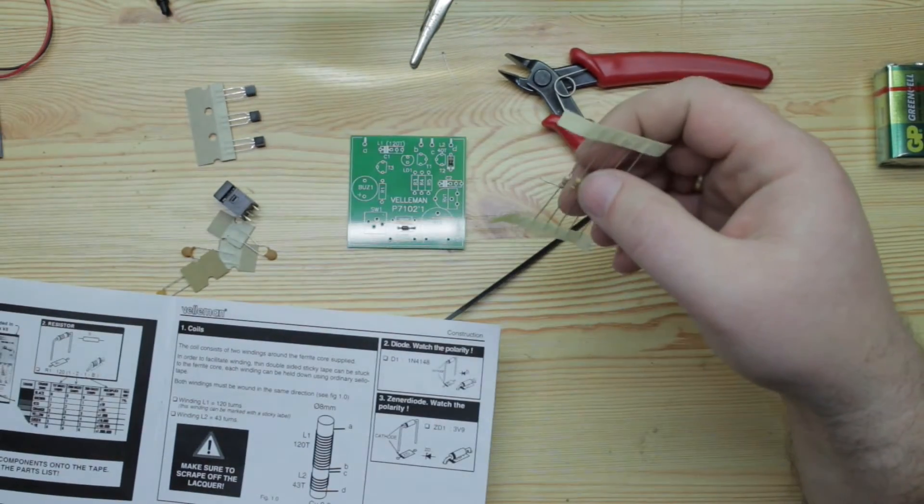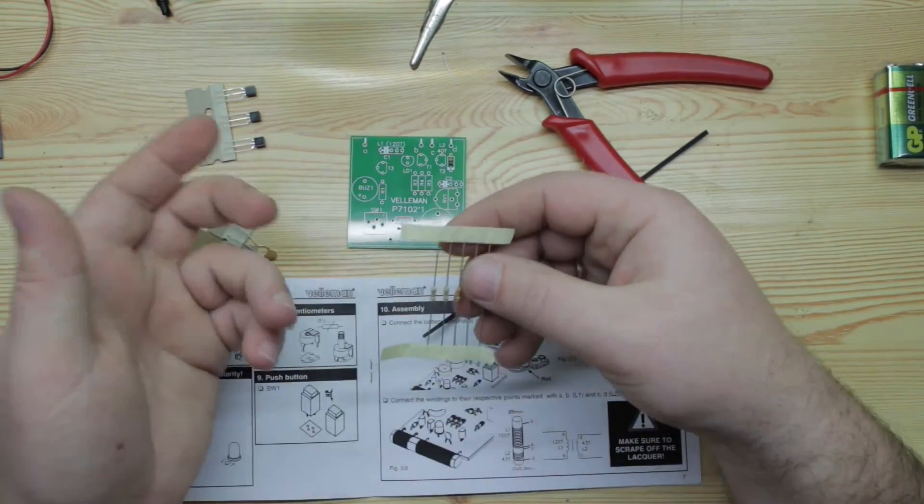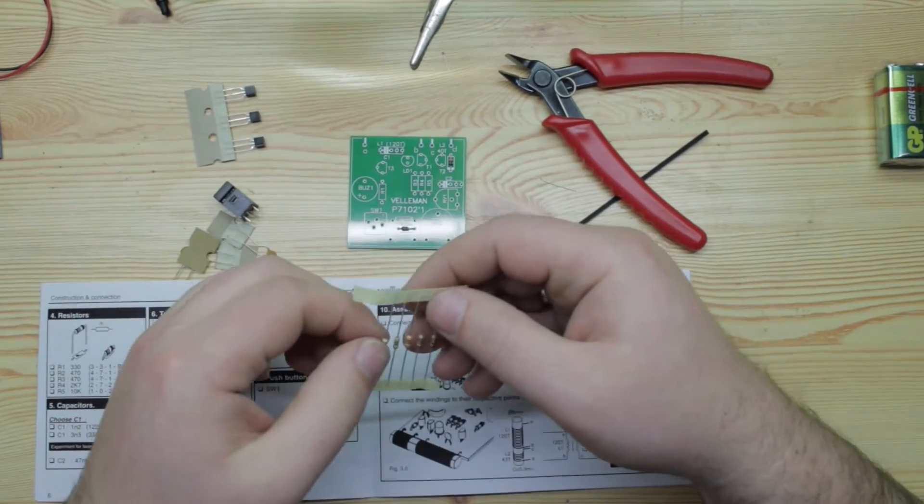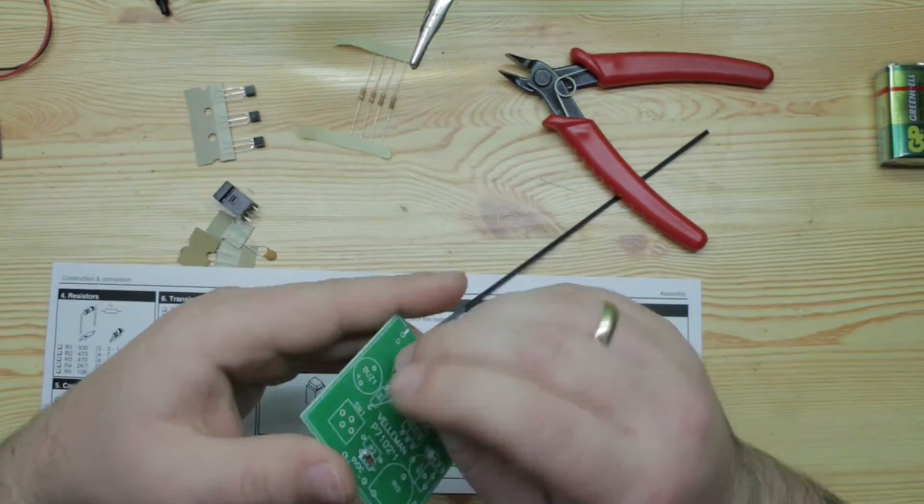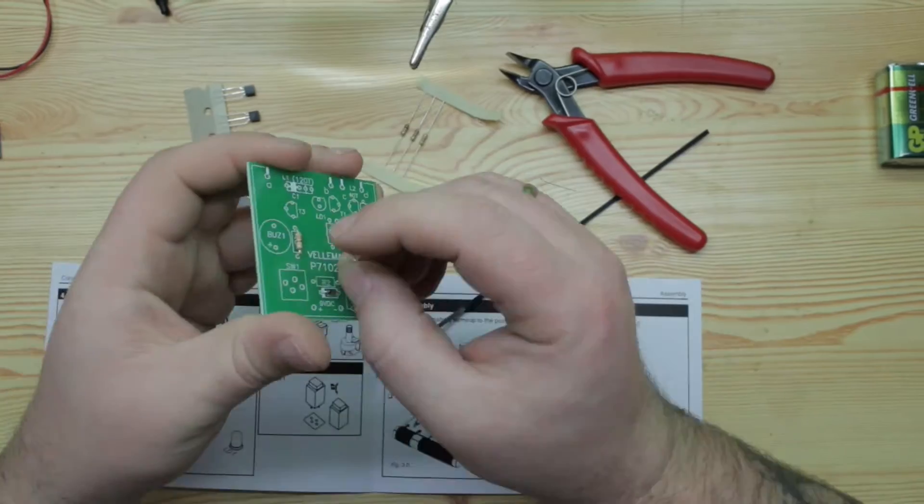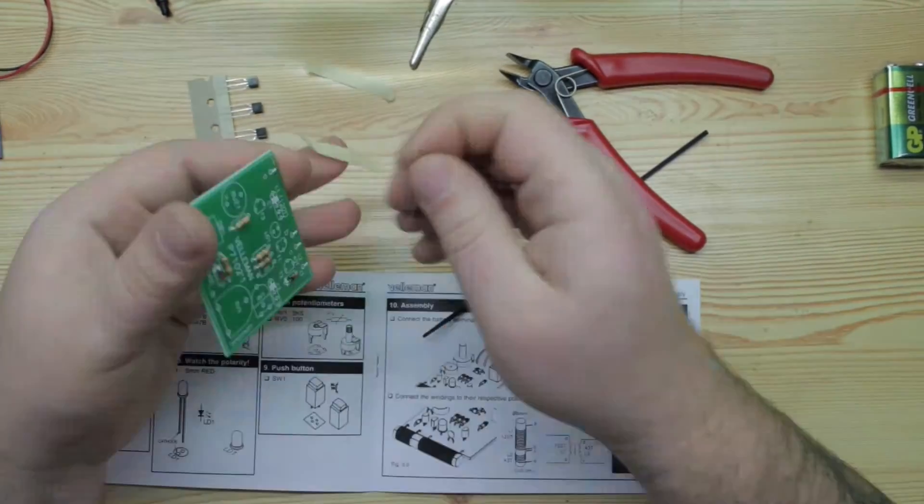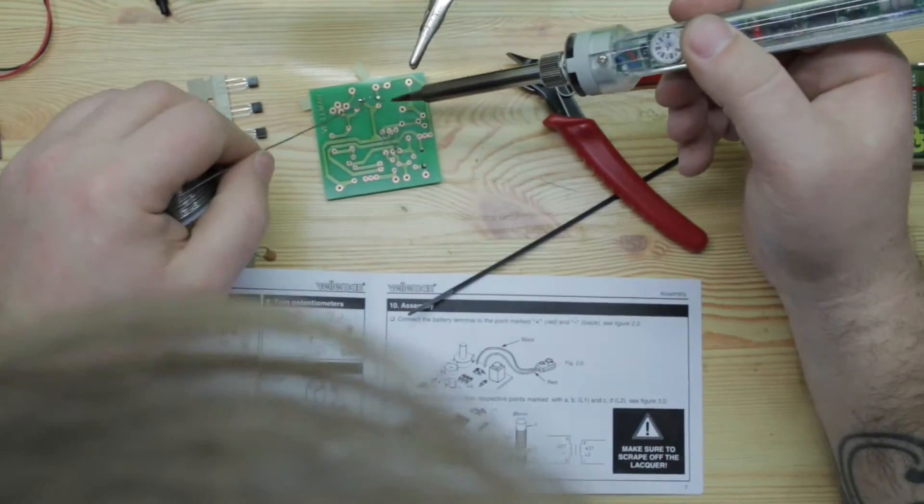Next step is to install resistors. I will go just by order that they provided and hope that it's okay. Let's solder everything in place.